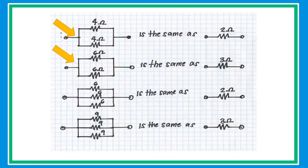If two resistors connected in parallel have the same value, the equivalent resistance is simply half of that value. For example, two 4-ohm resistors give 2 ohms, and two 6-ohm resistors give 3 ohms.